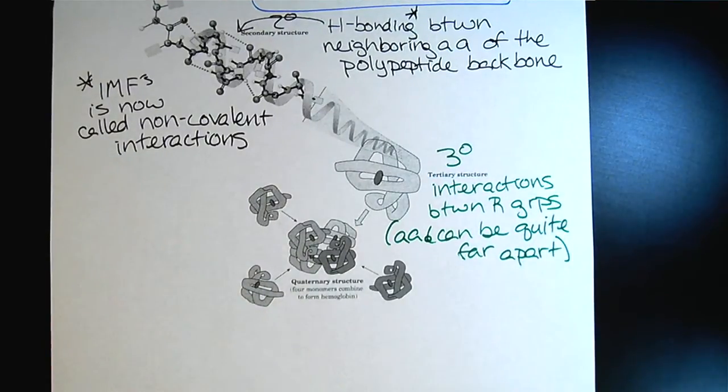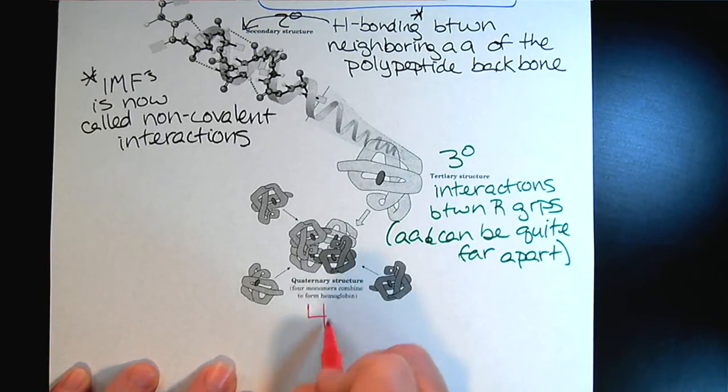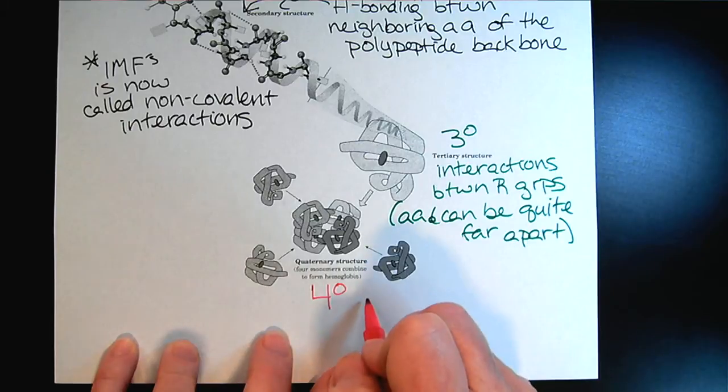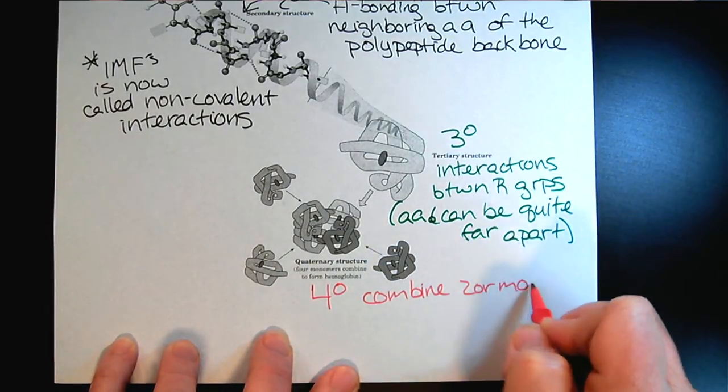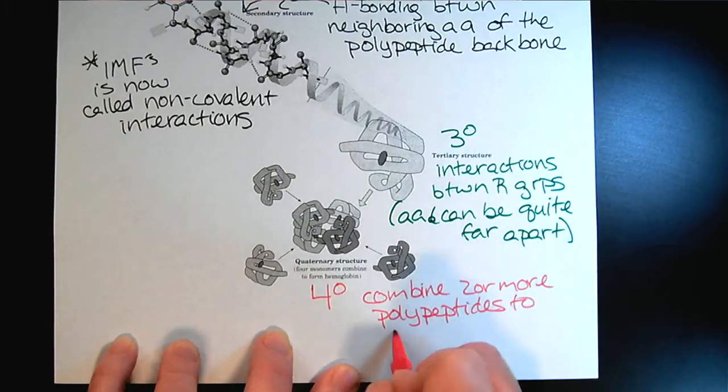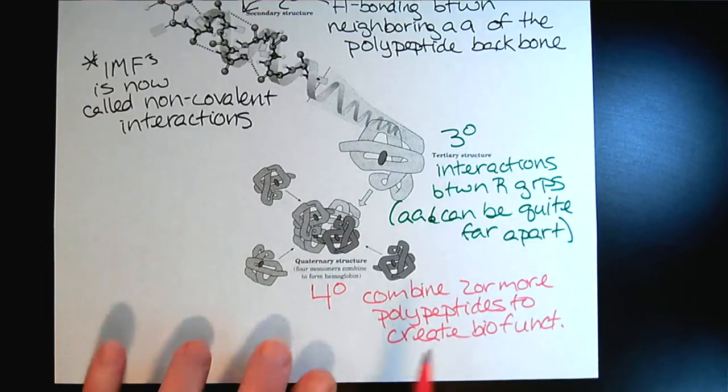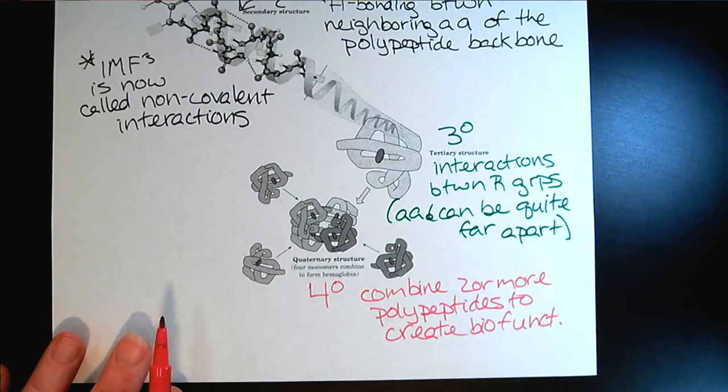The final aspect of protein structure is the quaternary structure. This is where we can combine two or more polypeptides to create biological function. For example, with hemoglobin, there are four polypeptides that are linked together with four heme groups to create our hemoglobin.